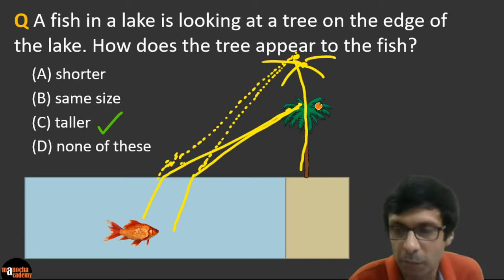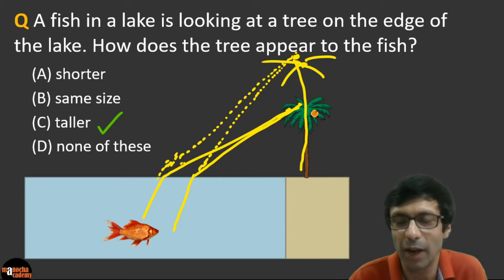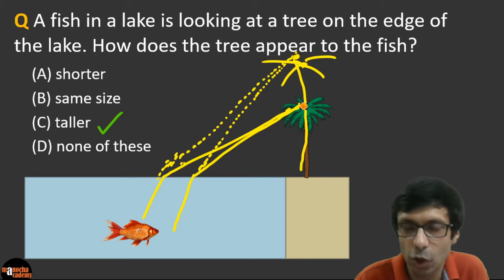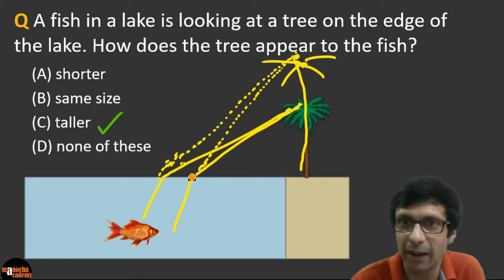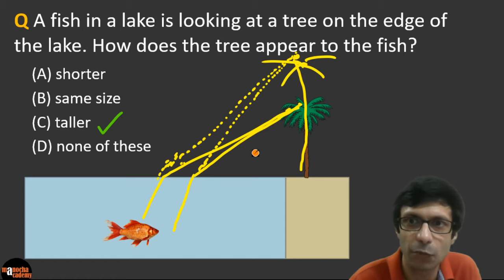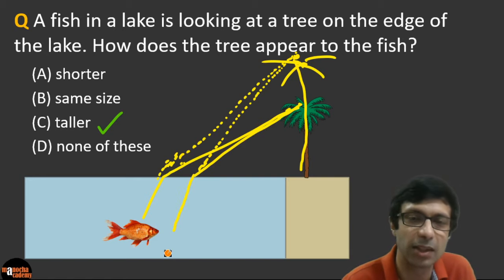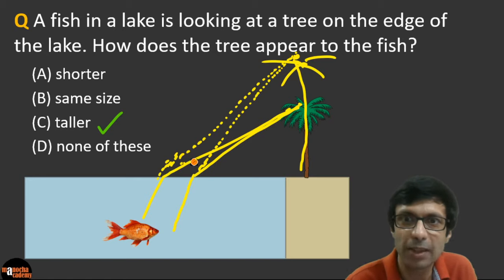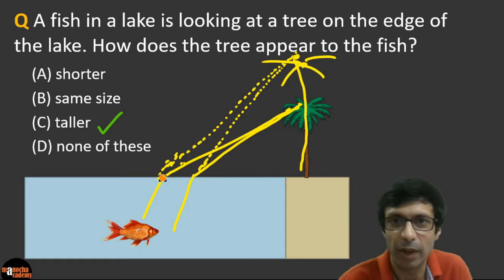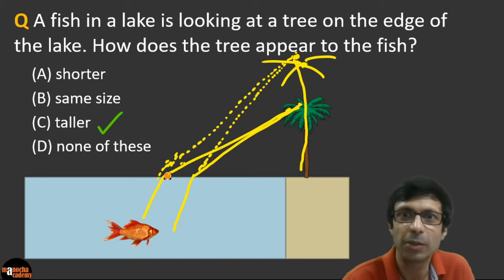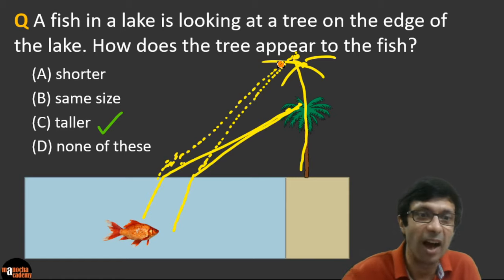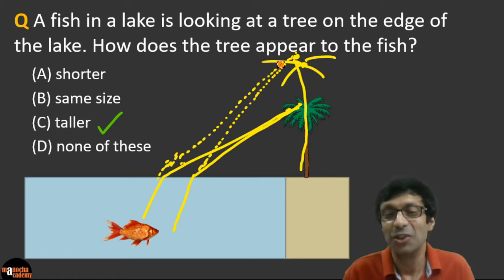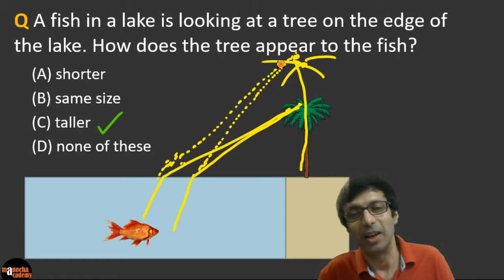The answer is that the tree appears taller. This is a very favorite question for refraction of light. The rays from the tree travel through air, bend towards the normal when entering water, and when traced back by the fish, they meet at a point higher than the actual tree — so it appears taller due to refraction of light.